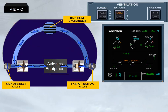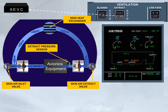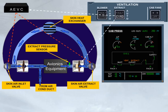A fault light comes on the related push-button switch in case of an extraction flow problem. Setting that push-button switch to override allows the ventilation system to be reconfigured by activating the closed-circuit configuration, by transferring the control of the extract fan to the push-button switch, and by adding air from the air conditioning duct through an air conditioning inlet valve.